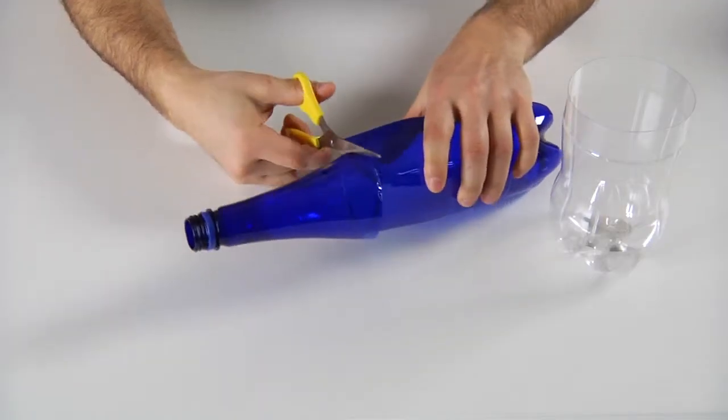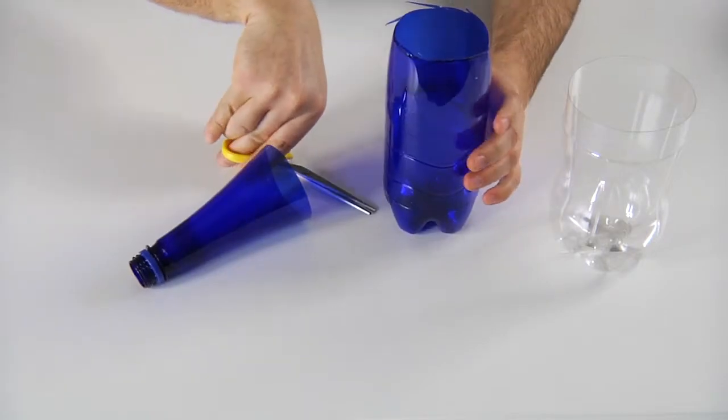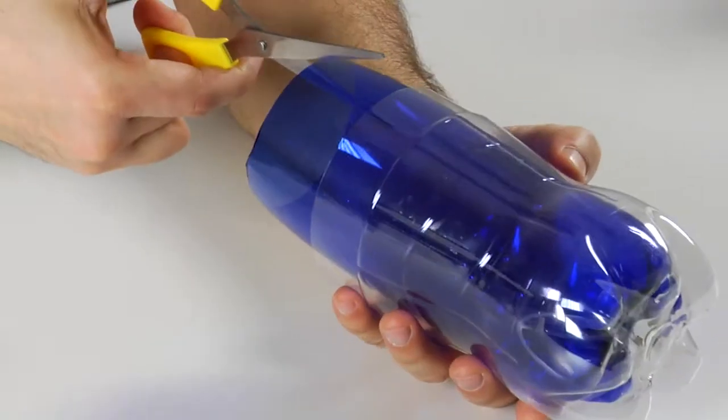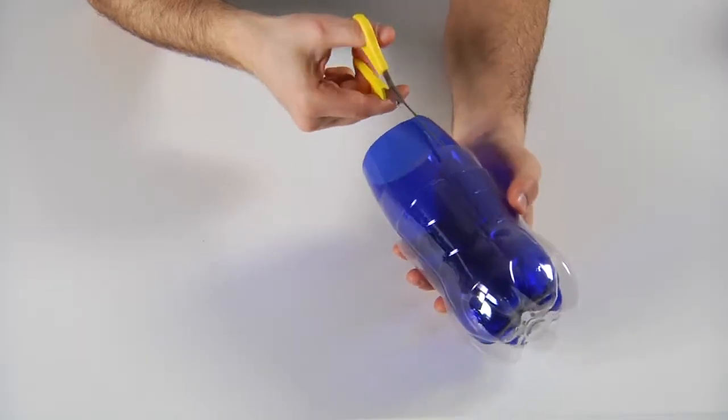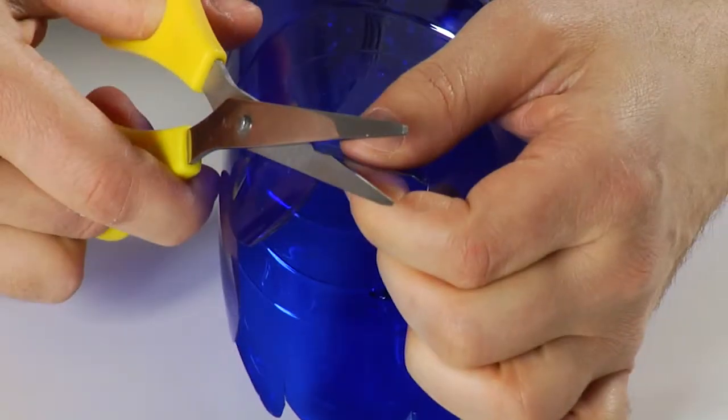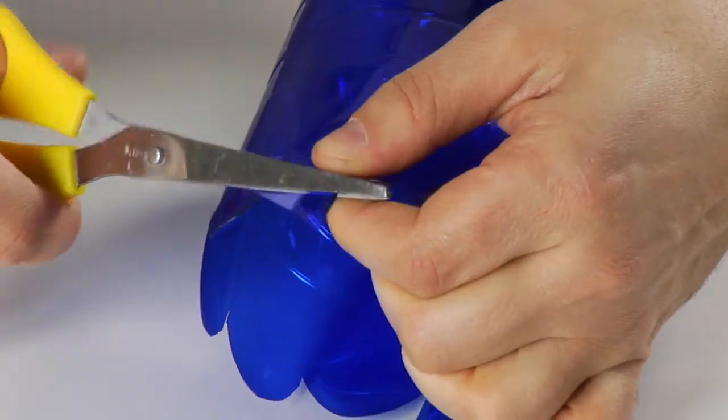Cut the small bottle along the line you've just traced. Now cut tabs of the same length in the upper part of the bottle. Shape the edges of the tabs by cutting the corners.